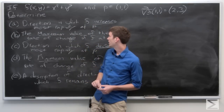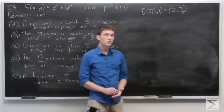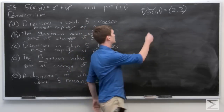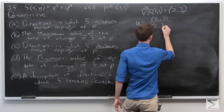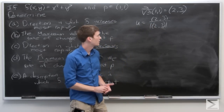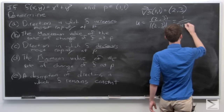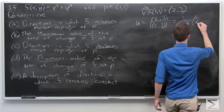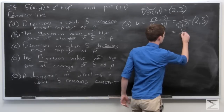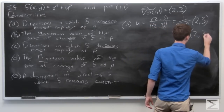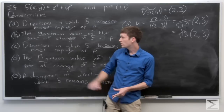We want to find the direction in which f increases most rapidly at p. We know that the gradient vector of f at (1,1) is ⟨2, 3⟩. So we want to find a unit vector in that direction — we're simply going to normalize our vector ⟨2, 3⟩. And we get 1 over the square root of 13 times the vector ⟨2, 3⟩. That's the result for part a.